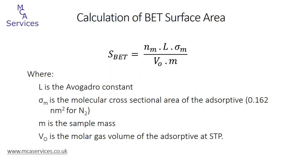Knowing the monolayer adsorption volume, we can calculate BET surface area per unit mass of the sample using an equation that incorporates the Avogadro constant, the molecular cross-sectional area of the adsorptive — for nitrogen we almost always exclusively use 0.162 square nanometers — the mass of the sample, and the molar gas volume of the adsorptive at standard temperature and pressure.